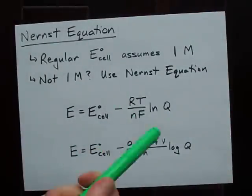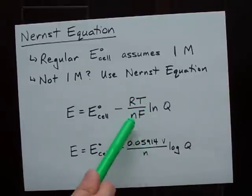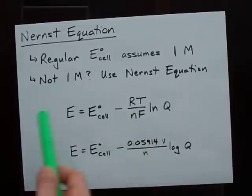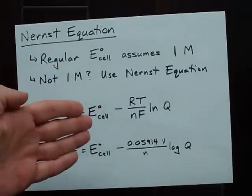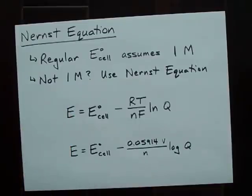R is the gas constant. T is your temperature. N is the number of electrons swapped each time the reaction happens. F is the Faraday constant. And Q is the same as your equilibrium value, or equilibrium expression, but with the actual concentrations.